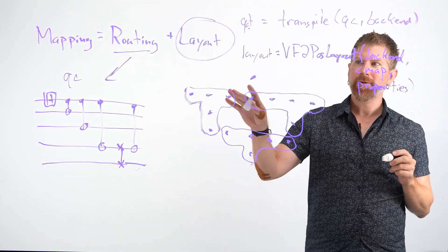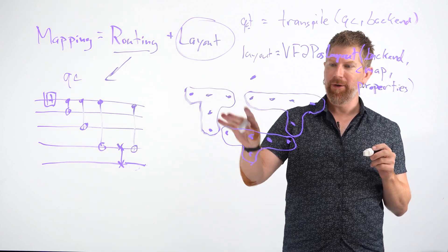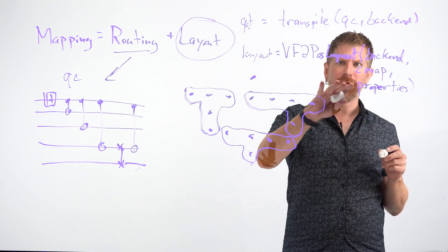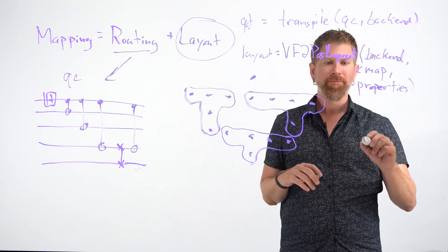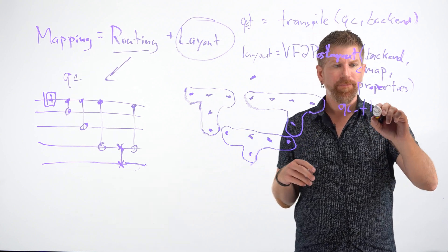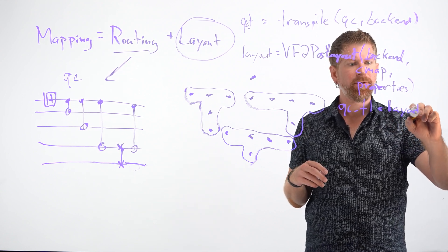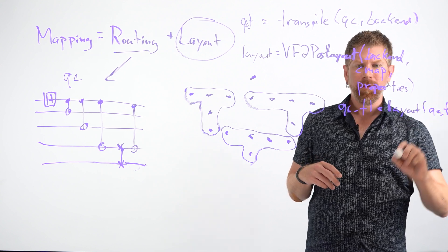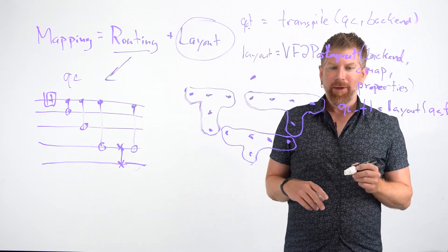So by doing this, by default, this will pick the best five qubit subsystem on this actual backend. And it will score it against the properties. And in this VF2 post layout, it typically uses the readout error as a default. And so once we put that through the transpiler pass, by just calling layout on the transpiled circuit, we will have something that is somewhat optimized for our backend.